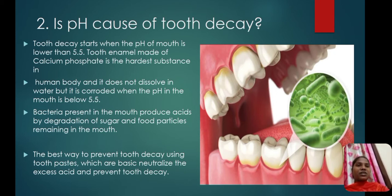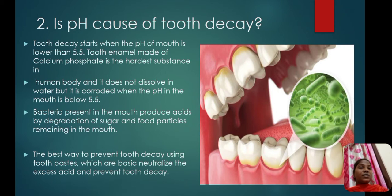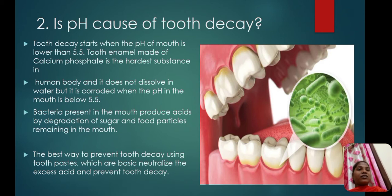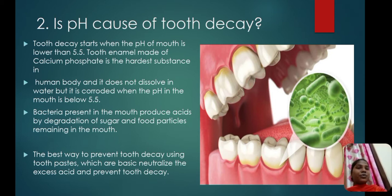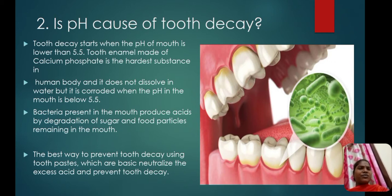Is pH the cause of tooth decay? Tooth decay starts when the pH of the mouth is lower than 5.5. Tooth enamel, made of calcium phosphate, is the hardest substance in the human body and does not dissolve in water, but it is corroded when the pH in the mouth falls below 5.5. Bacteria present in the mouth produce acids by degradation of sugar and food particles remaining in the mouth. The best way to prevent tooth decay is using toothpaste which is basic — it neutralizes the excess acid and prevents tooth decay.